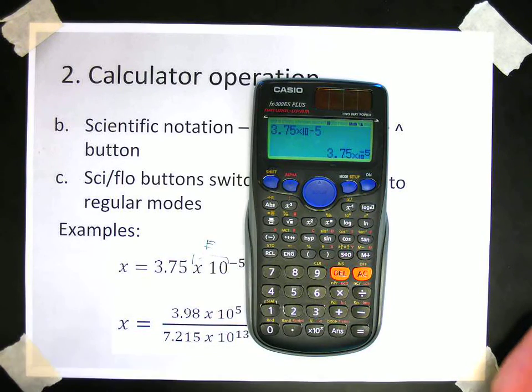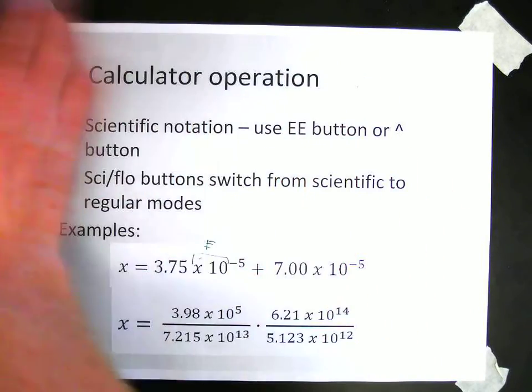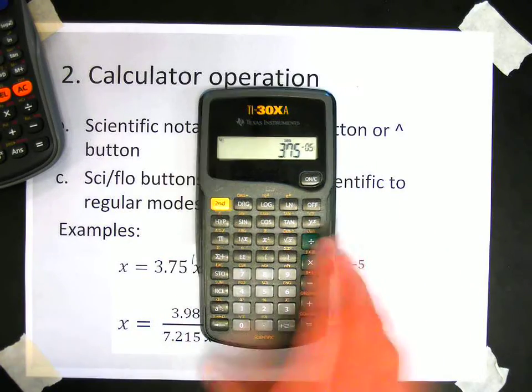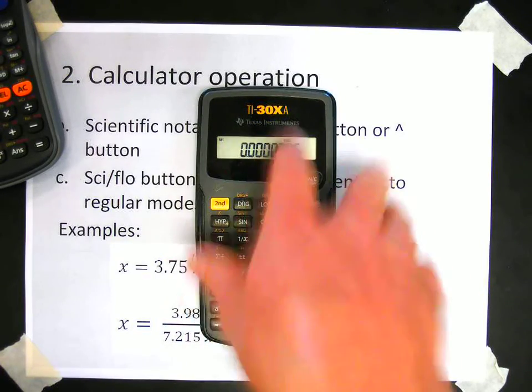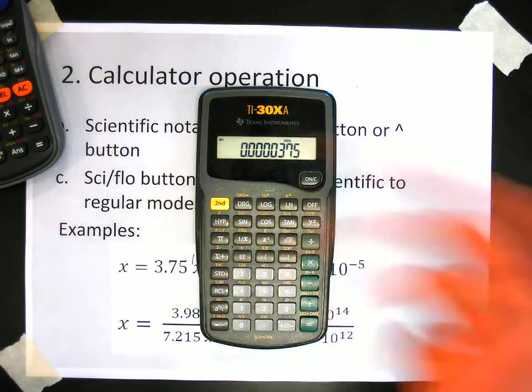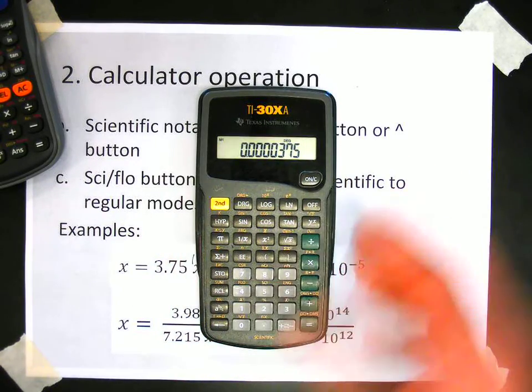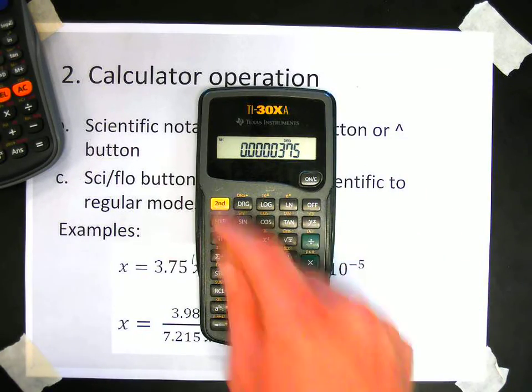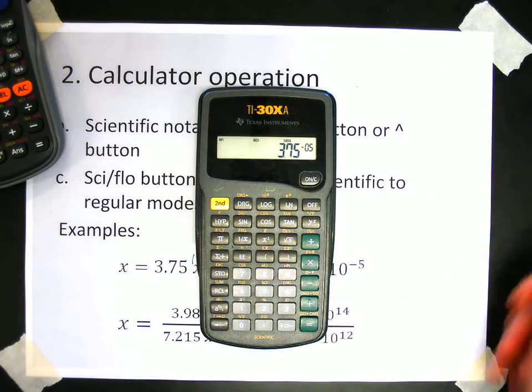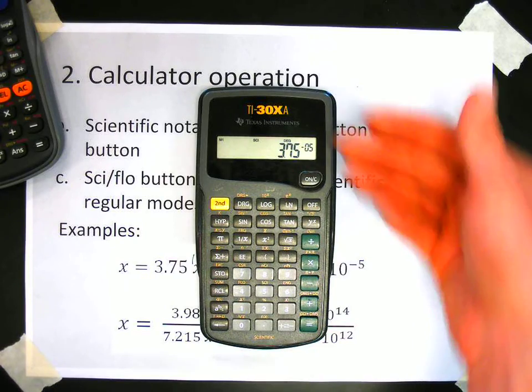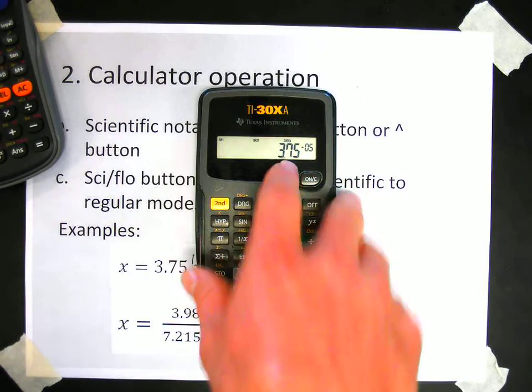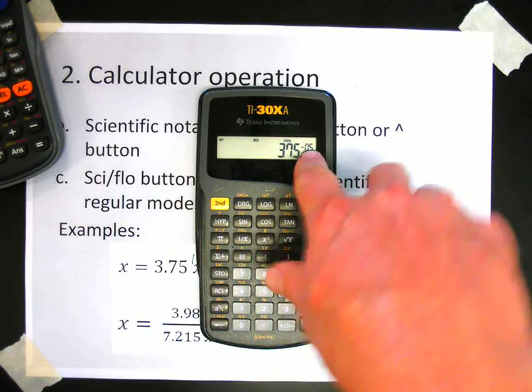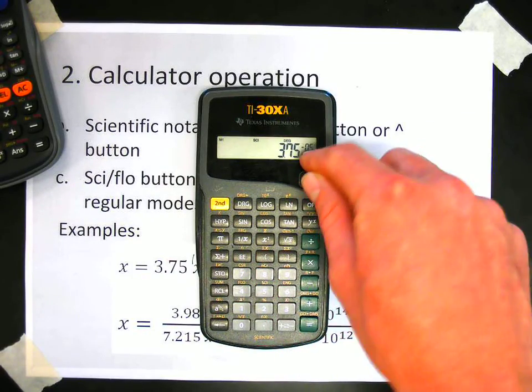Now, another thing that you can do with calculators is you can toggle between the scientific mode and the regular mode. So for instance, this calculator is set for the standard notation. Now, I could have my calculator automatically put that number into scientific notation by pressing 2nd and SCI. And there we go. So 3.75 times 10 to the negative 5th. And that's how you would read that. Remember that the 10 is included, and that's the exponent above the 10th.